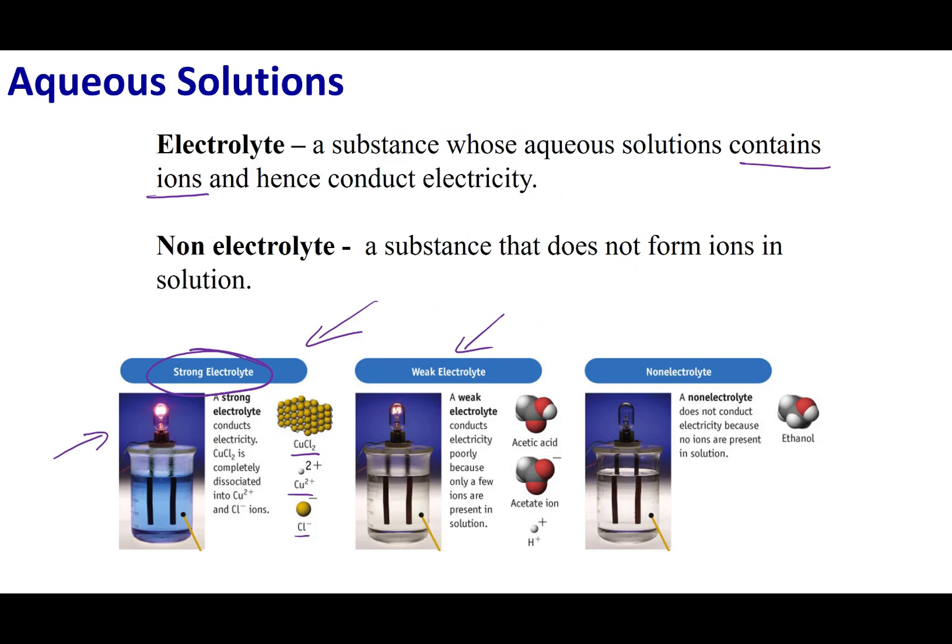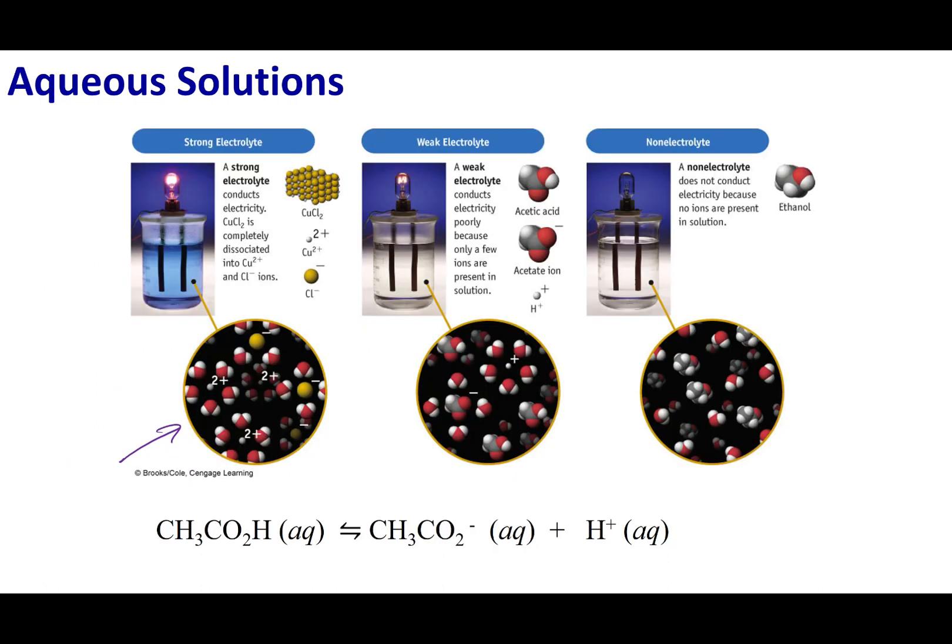Now there's something called a weak electrolyte. A weak electrolyte is going to produce ions in solution, but what's going to happen is not all of my compound is going to break up. For example, if you look at acetic acid, it can break up into the acetate ion and the H plus. Now if you look at this picture, what you will see is some of my acetic acid is going to remain intact, but some of my acetic acid is going to break up.